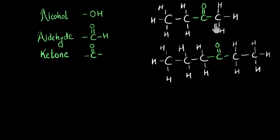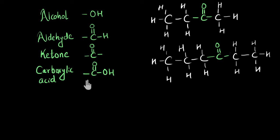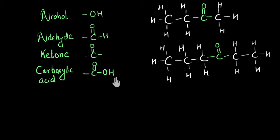Ketones are generally used in medicines. Now let's look at carboxylic acid again. What I want to show you is how similar these functional groups appear. All three — aldehyde, ketone, and carboxylic acid — have the C double bond O group in them. Whereas carboxylic acid and alcohol both have the OH group in them. So they might all appear very similar, yet they provide very different functions to the hydrocarbons they get attached to. All of these are commonly called oxygen-containing functional groups because all of them have an oxygen atom in them.